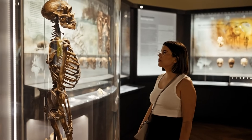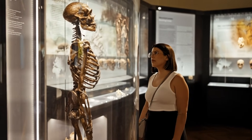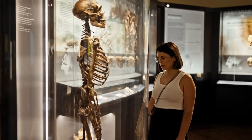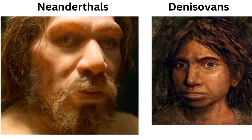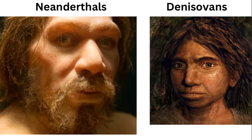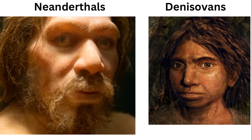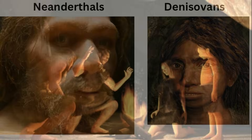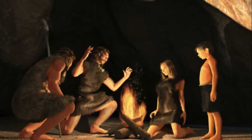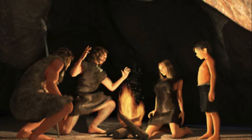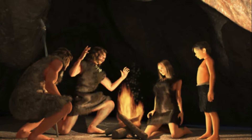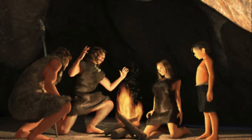The discovery of this genetic legacy wouldn't have been possible without incredible advancements in paleogenomics. A major breakthrough came in 2010 when scientists sequenced the Neanderthal genome. Building on this knowledge, studies in later years used cutting-edge tools like the SPRIME algorithm to scan human genomes in greater detail. For example, a 2018 study found segments of Denisovan DNA in European populations, though the levels were modest, about 0.1% to 0.5% on average.